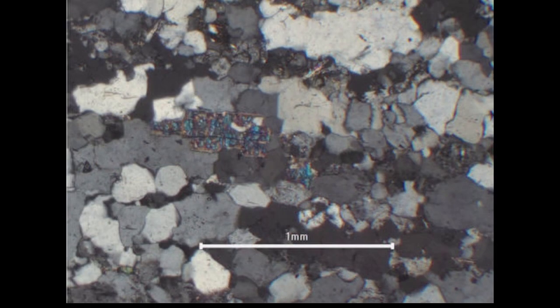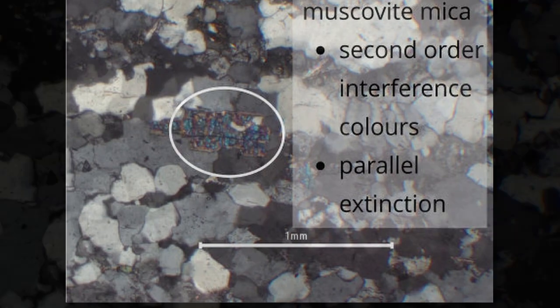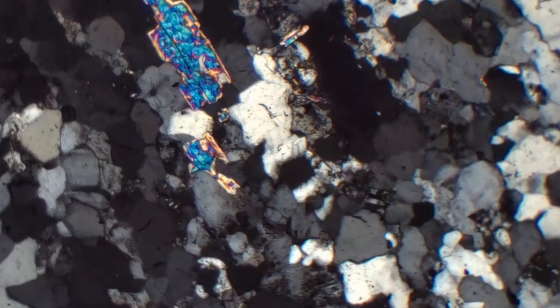Under cross polars, muscovite mica shows second order interference colours. As the stage is rotated, the mineral has an extinction that is parallel to the cleavage direction when it is north-south or east-west.